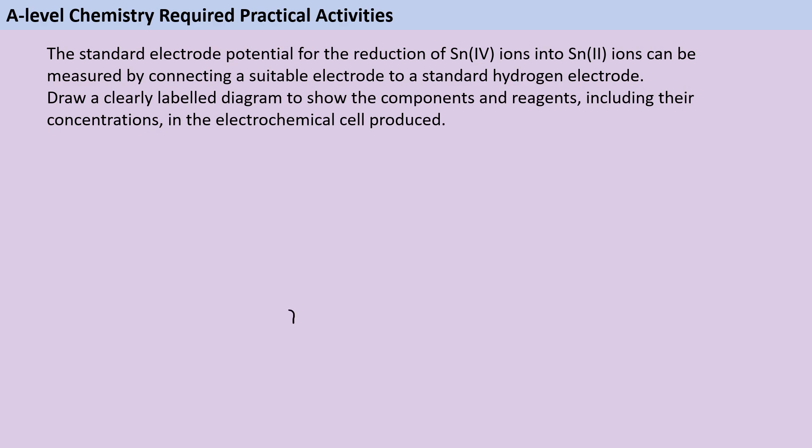To start with I need two beakers to be my two half cells. One of these beakers for the standard hydrogen electrode is going to contain 1 mol dm⁻³ HCl and the other beaker is going to contain a mixture of compounds containing the Sn²⁺ and Sn⁴⁺ ions.